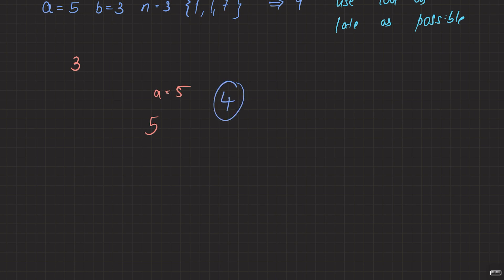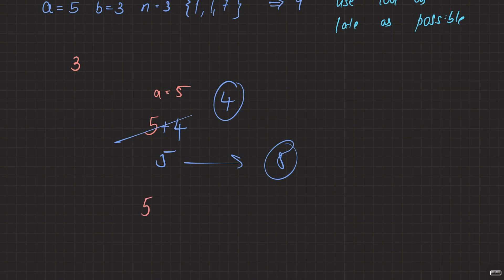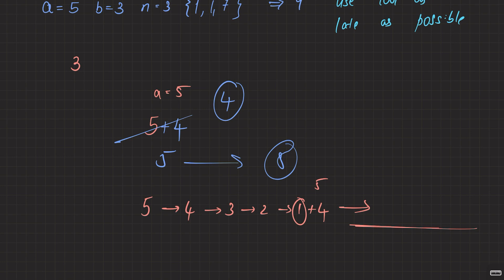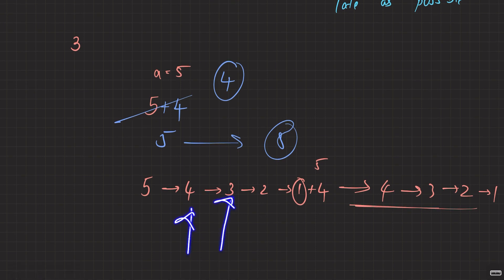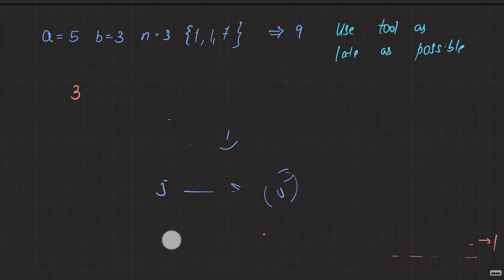But if I use the tool as late as possible — let the timer go to four, three, two, one — and then use the tool with value four: one plus four is five, bounded to five. Now I get five more seconds. So I used the same tool but gained extra time by waiting. It is easy to observe: using the tool earlier here, here, or here would not have given this much time. Use the tool as late as possible to maximize time.